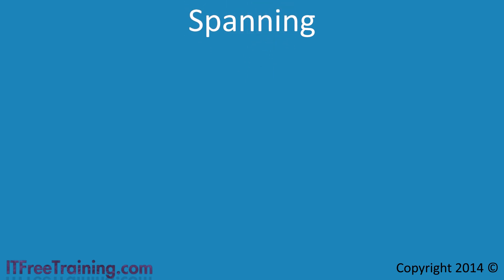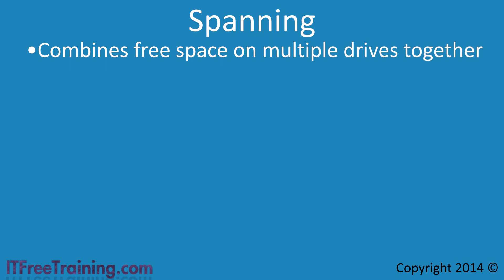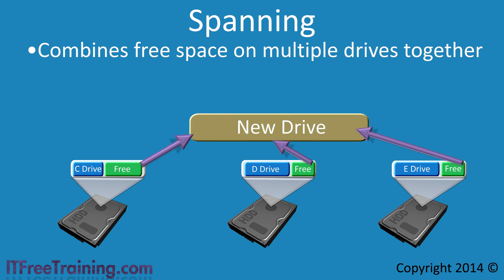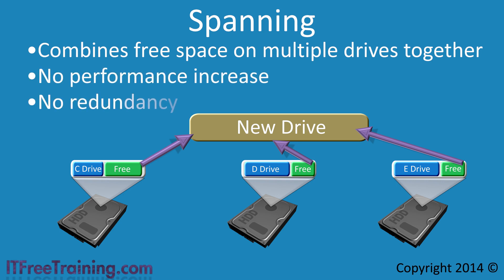The next solution is called Spanning. Typically a software solution, Spanning allows the free space on multiple drives to be combined into one drive. For example, if there are three hard disks with free space that is not being used, Spanning allows the free space from each of these drives to be combined into one drive. This allows you to use free space that may have otherwise gone to waste. However, doing so offers no performance improvements or redundancy. If any drive used in the span set is lost, all data is lost.